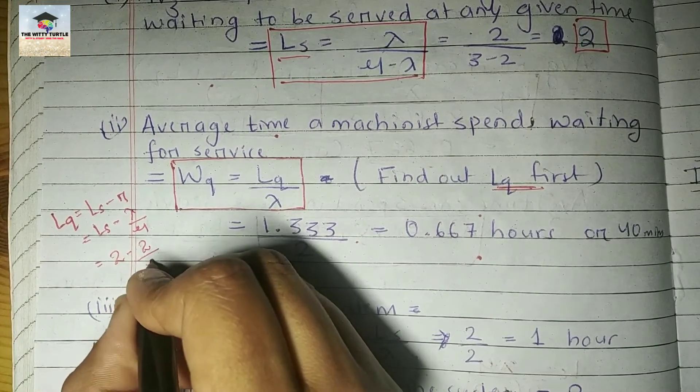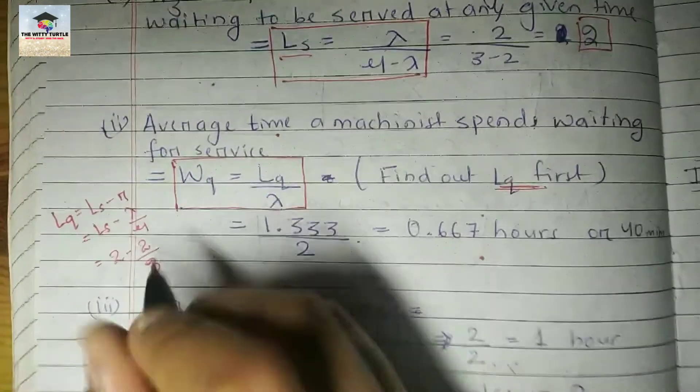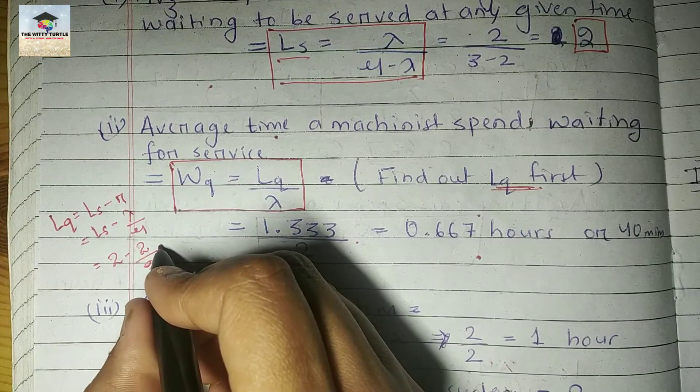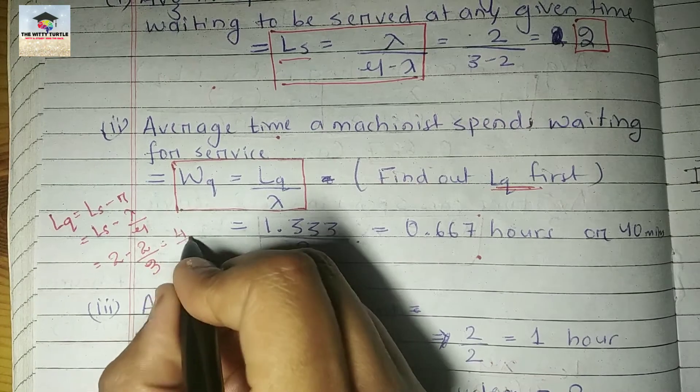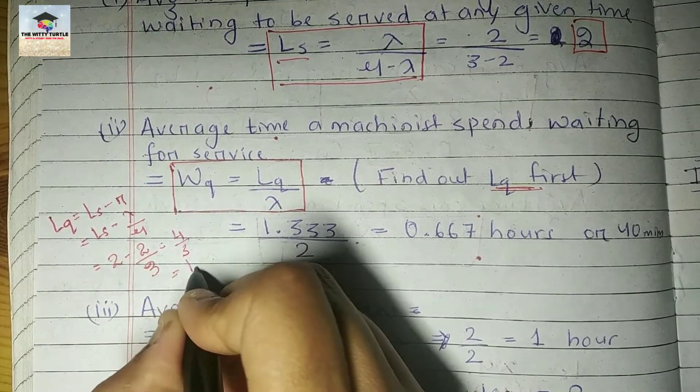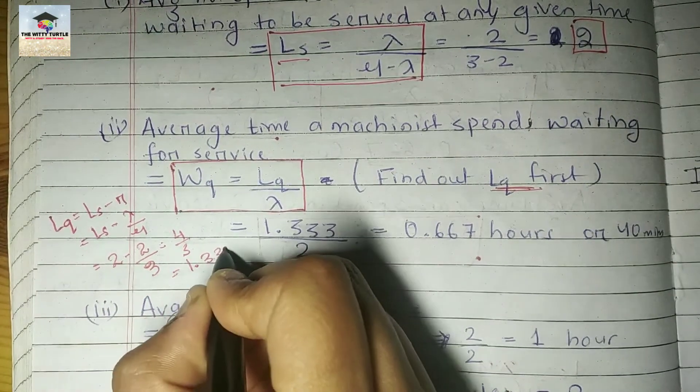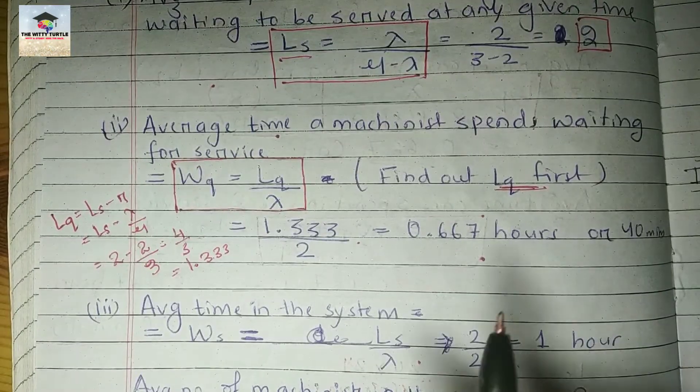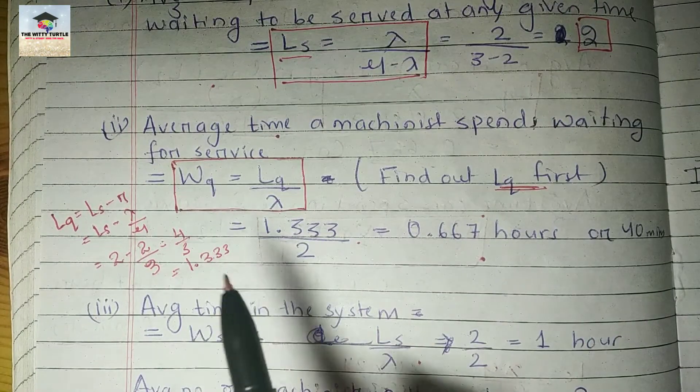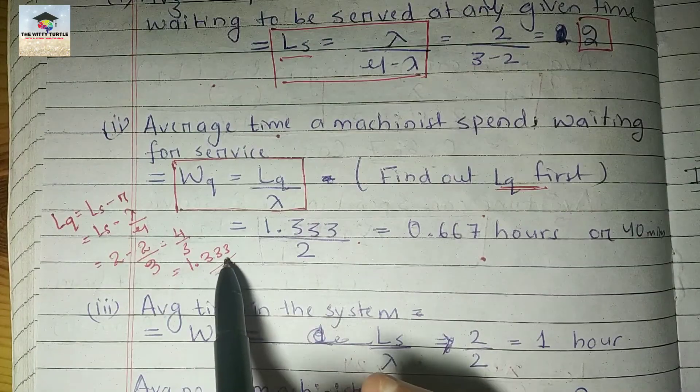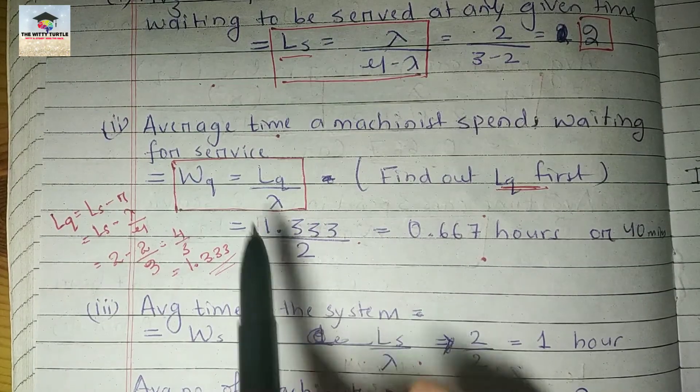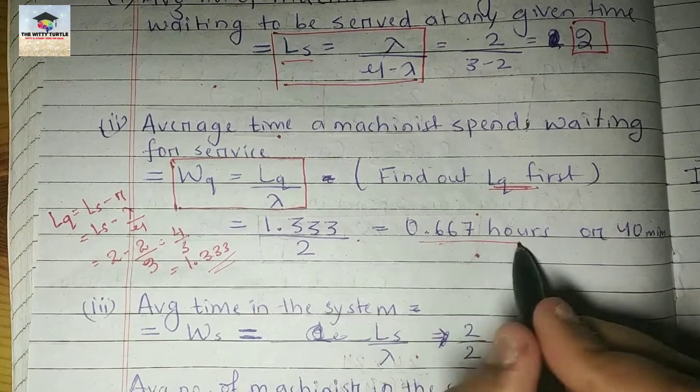Lambda is 2 and mu is 3, so this will come as 6 minus 2, which will be 4 by 3, approximately 1.33. So now we can easily calculate the value of Wq, which will be 1.333 divided by lambda which is 2. So we got the answer.